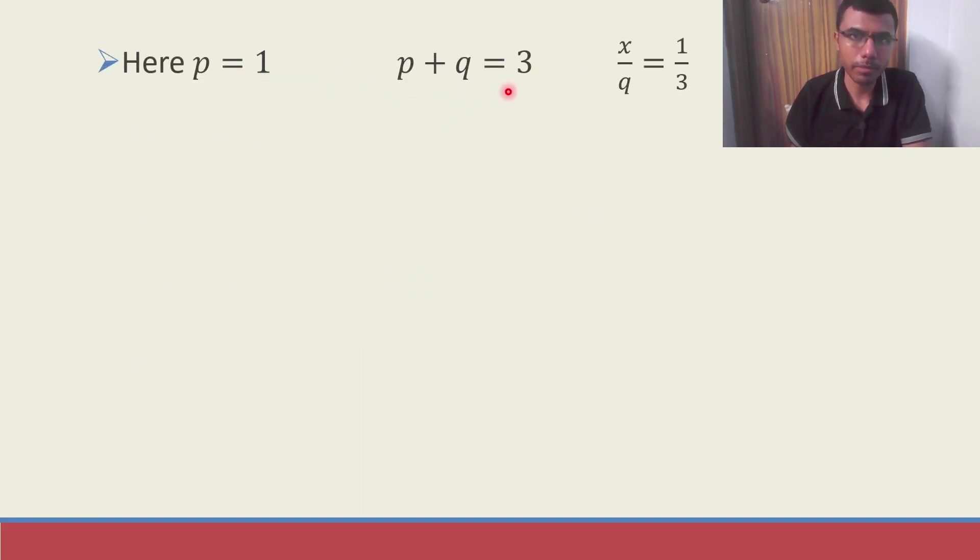So here p is 1, p plus q is 3 and x by q is 1 by 3 as I mentioned. So just put that here 1 plus q is 3 and q would be nothing but 2. x by q is 1 by 3. So q we got it as 2. So x by 2 is 1 by 3. So x is nothing but 2 by 3.